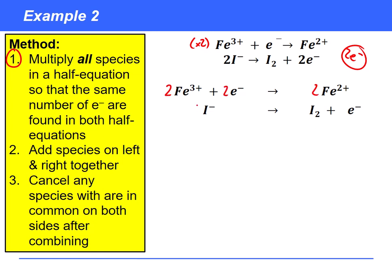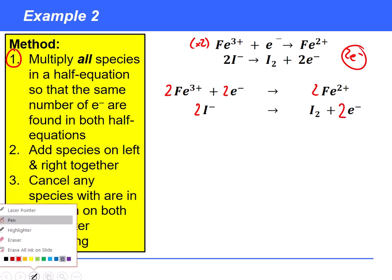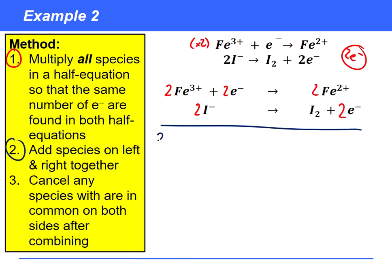Then we can combine. So 2Fe3+ plus 2 electrons plus 2 iodide goes to 2Fe2+ plus I2 plus 2 electrons. We're going to cancel any species that are common on both sides after combining which in this case is just the electrons.